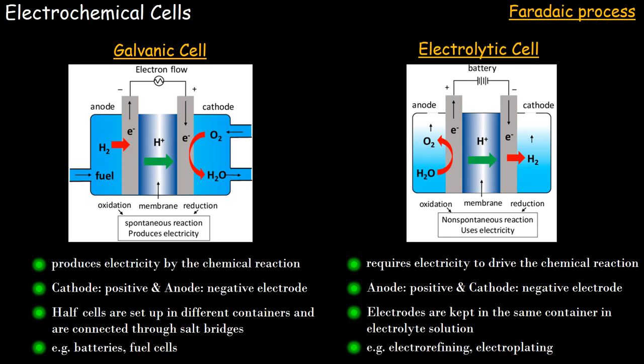We have to remember that for galvanic cells, cathode is positive and anode is negative. This is the typical galvanic cell representation. A few examples of galvanic cells are batteries — we exploit some chemical energy and generate electrical power, which we use for certain applications. Fuel cells are another example we already talked about.